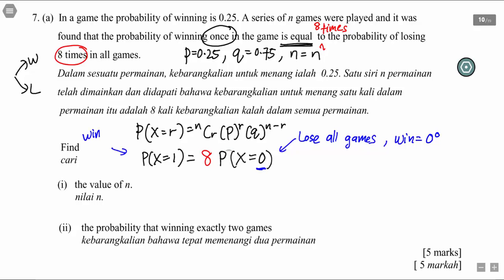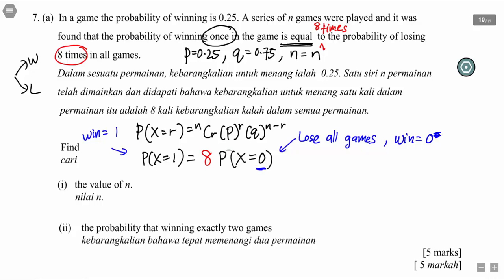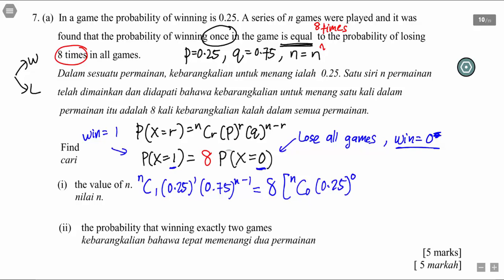So I just solve this equation. The question is saying: probability of winning once (r = 1) equals eight times the probability of losing all games (win = 0). I substitute: nC1 × 0.25^1 × 0.75^(n−1) = 8 × nC0 × 0.25^0 × 0.75^(n−0).